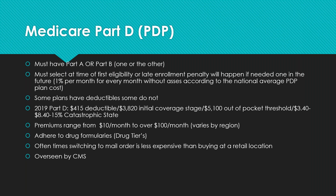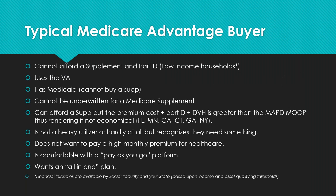Moving to path two: who is the typical Medicare Advantage buyer? Usually it's pricing that drives someone to a Medicare Advantage plan. For a low-income household that cannot afford a Medicare supplement plus Part D, there are financial subsidies available through Social Security and your state based on income and assets. If you're married with income under $3,000/month or single under $2,000/month, it's worth exploring those subsidies — though approval depends on guidelines.